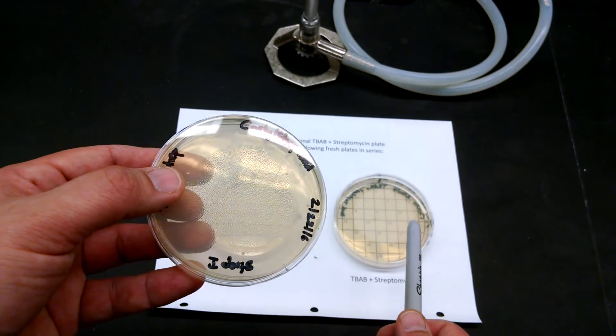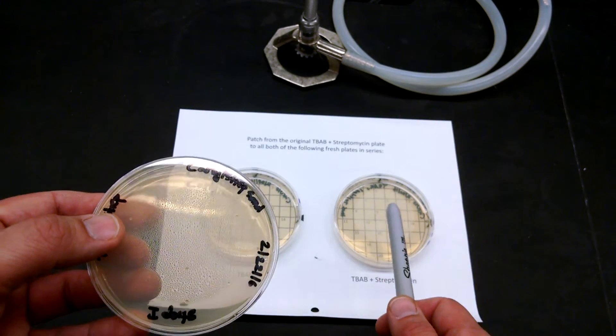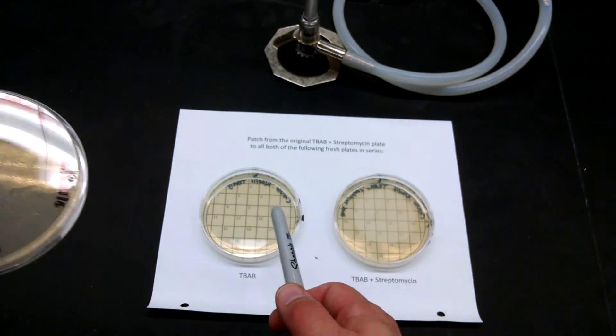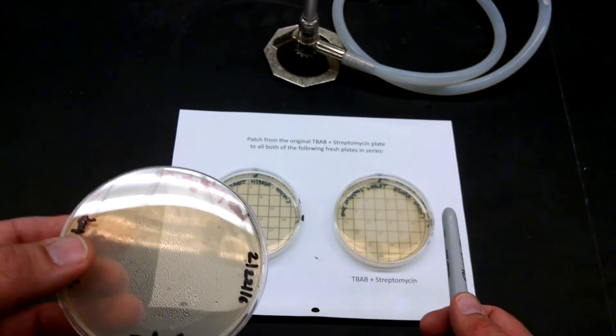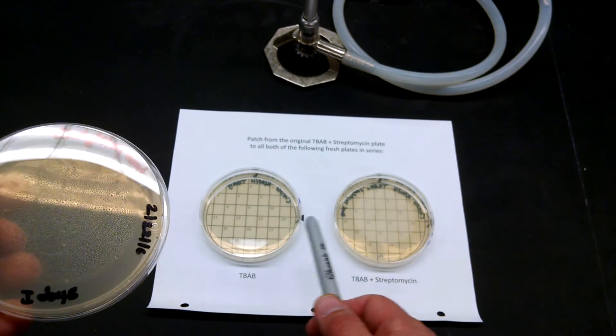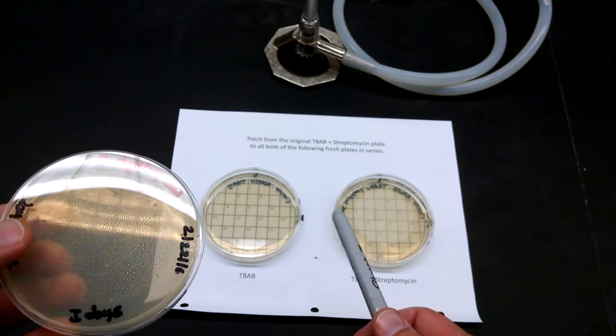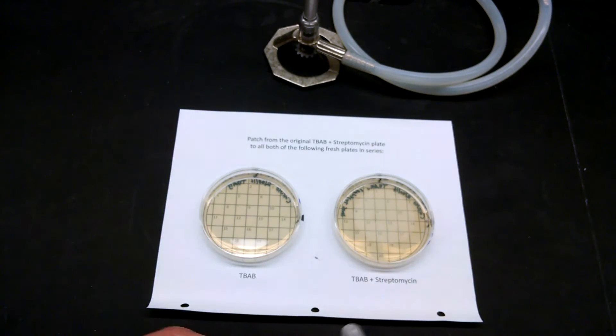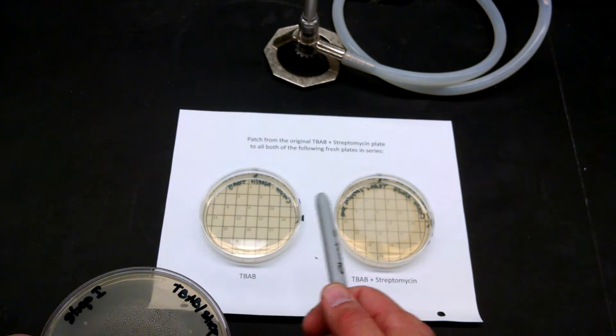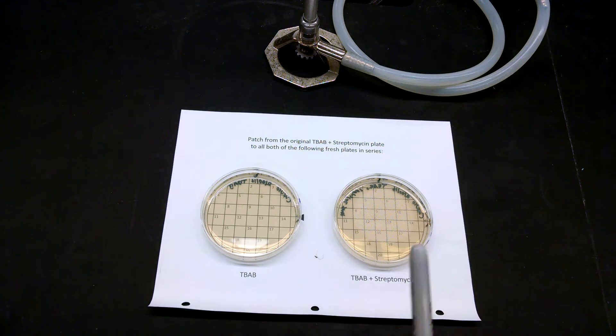That way, if nothing grows, we know there was a problem in the patching, right? If nothing grows here and something grows there, we know it's real. If nothing grows on this one but something grew on that one, we know it was a problem with the patching. So that's a control. Always do the new thing first and then the old thing last.